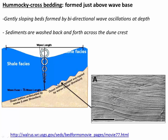Hummocky cross beds are formed by currents or wave energy much more subdued compared to regular cross bedding. Importantly, these form just above the wave base. Whereas regular cross bedding might form in really shallow water, hummocky cross bedding forms in much deeper water and can usually be interpreted as being near wave base or just above it.